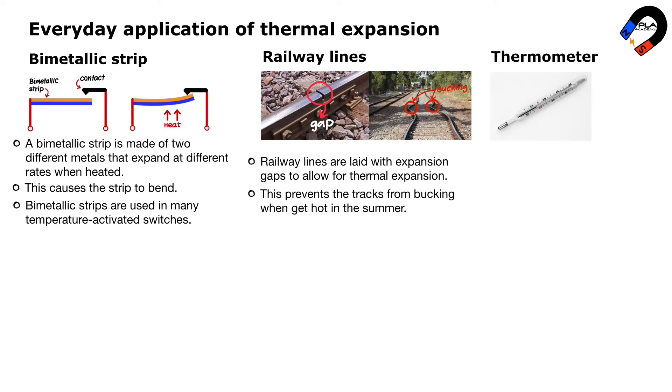Thermometers use the expansion of a liquid to measure temperature. The most common liquid used in thermometers is mercury, but alcohol is also used. When the thermometer is heated, the liquid expands and rises up the tube. The height of the liquid in the tube is then used to measure the temperature.